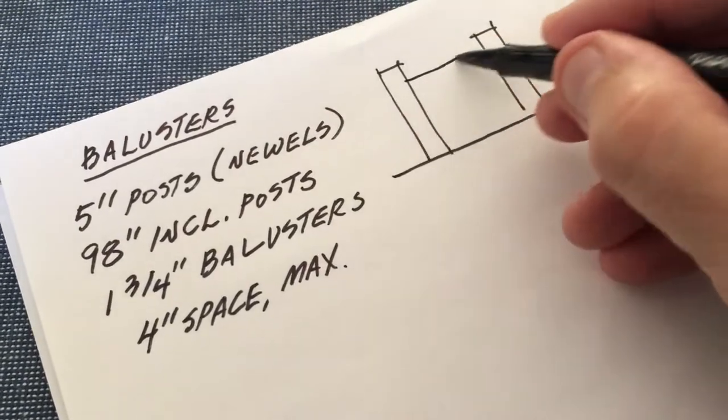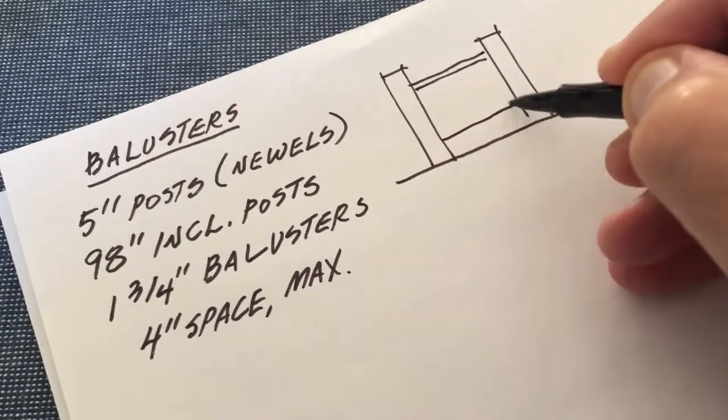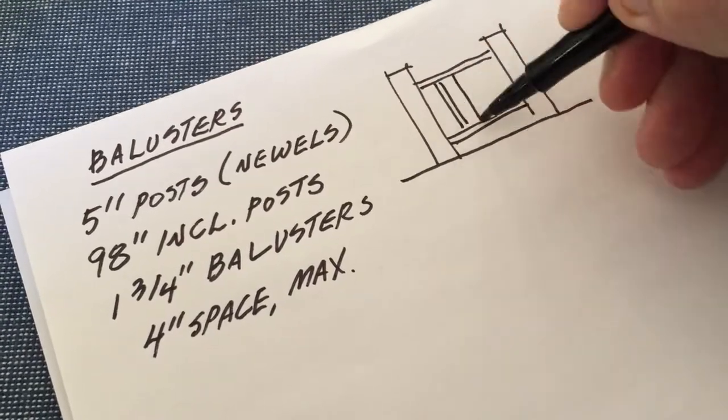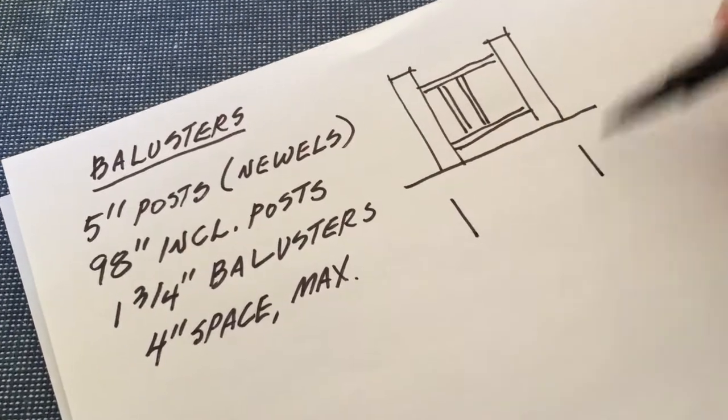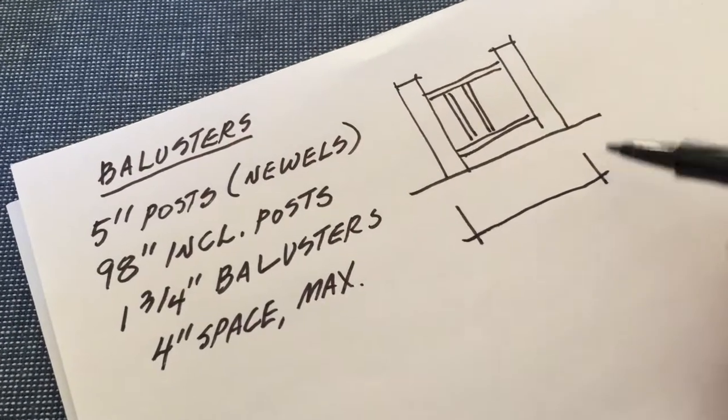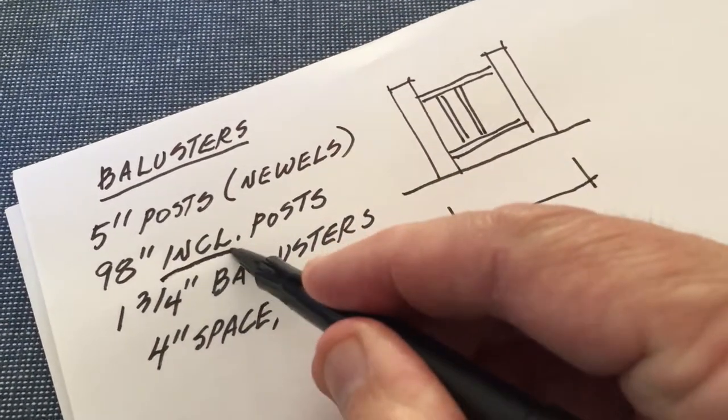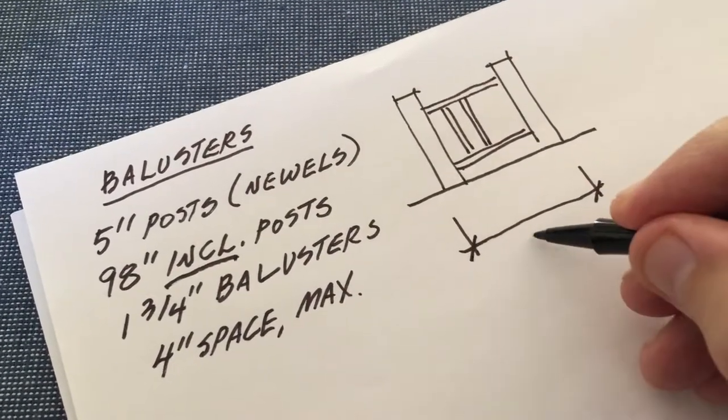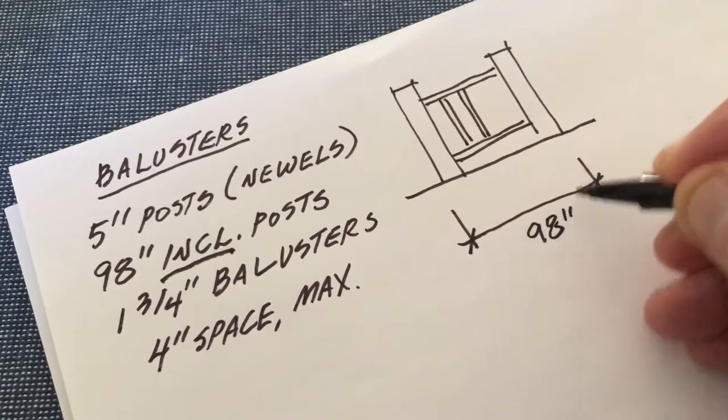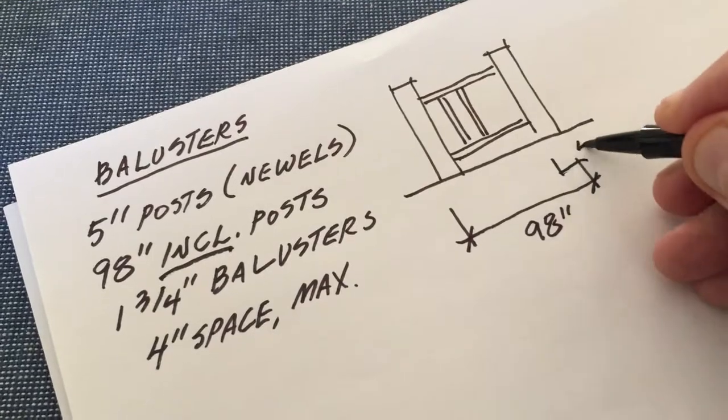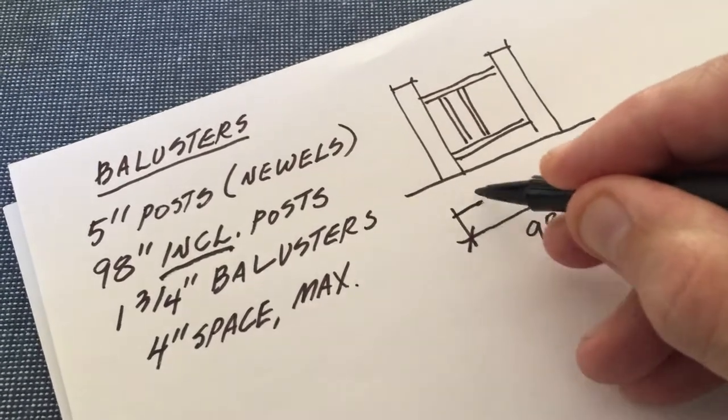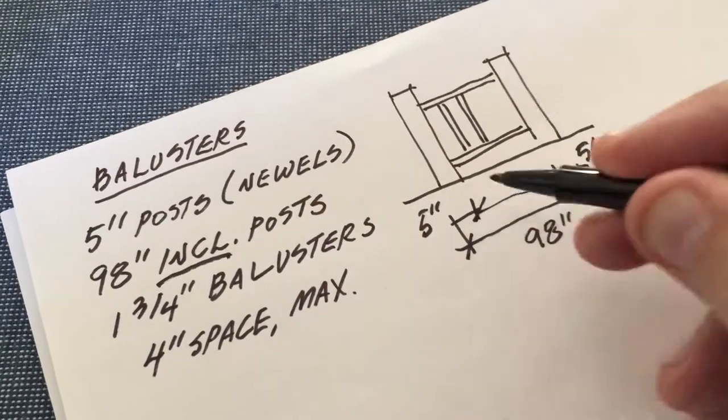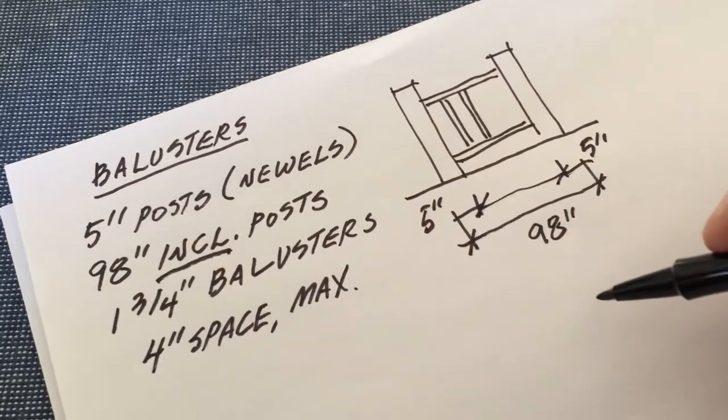Here's the posts - my balusters are going to go in here. It says that outside to outside including the posts I have 98 inches, so that means these are five inches, this is five inches, and the distance I'm looking for to start my problem is in between.